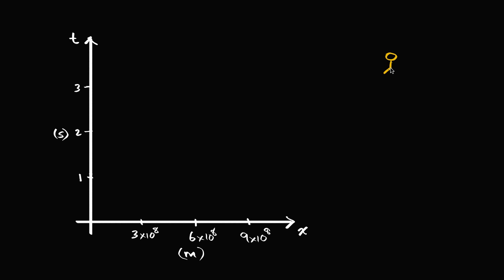Let's say this is me right over here, and I'm drifting through space at a constant velocity relative to any other inertial frame of reference. So I am in an inertial frame of reference myself. In fact, I'm going to define my frame of reference by me. I'm going to say I'm at the origin of my frame of reference. At all times, I consider myself to be stationary and I'm at the point x equals zero. And we're going to focus on just the x dimension to simplify our discussion.